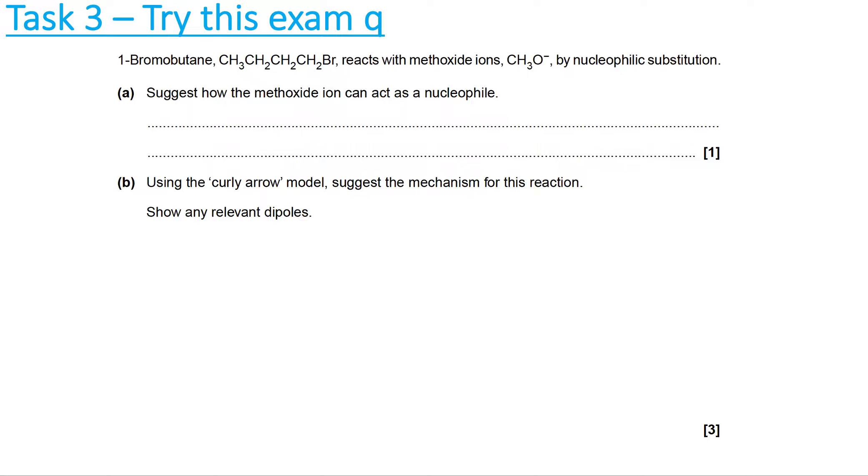We're going to look at a couple of exam questions about haloalkanes. This one has 1-bromobutane reacting with methoxide ions by nucleophilic substitution. It asks how the methoxide ion can act as a nucleophile. A nucleophile is an electron pair donor, and methoxide ions have a lone pair of electrons on the oxygen. So the answer is it can donate a pair of electrons.